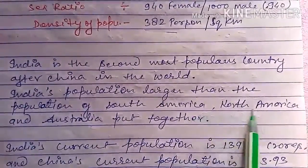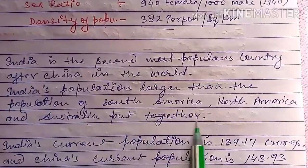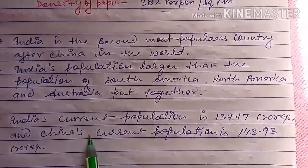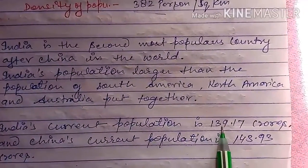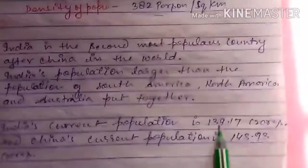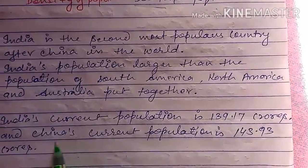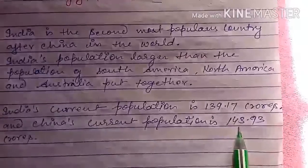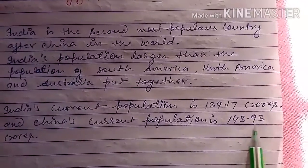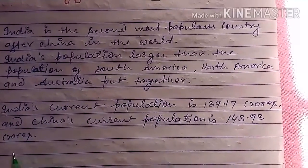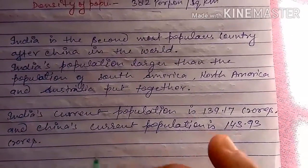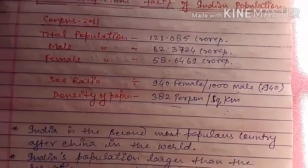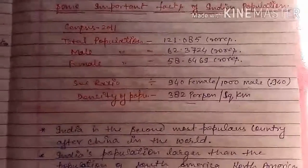India's population is larger than the combined population of South America, North America, and Australia. India's current population is 139.17 crores and China's current population is 143.93 crores. These are some important facts from this chapter.